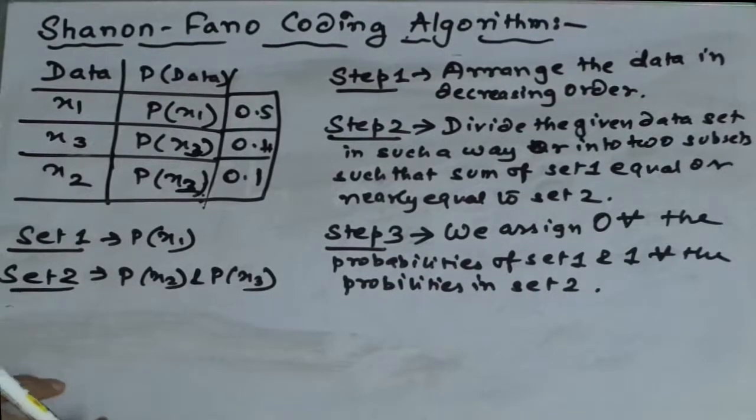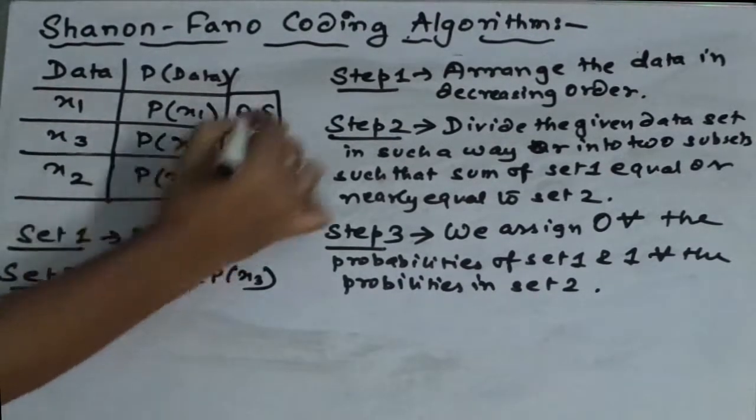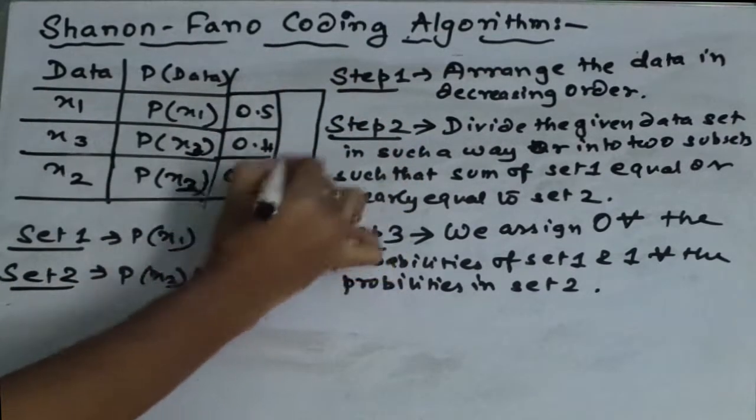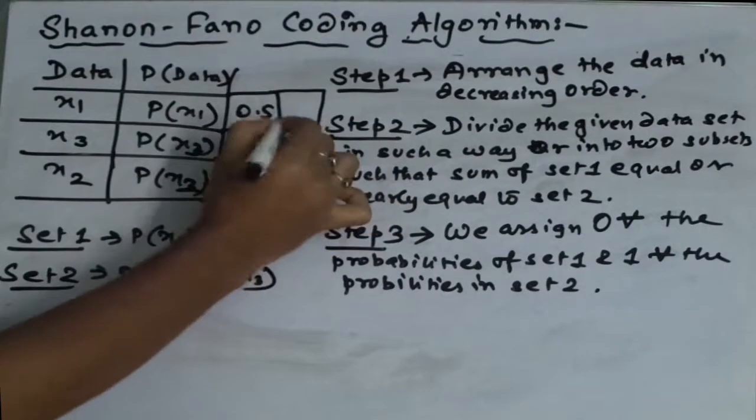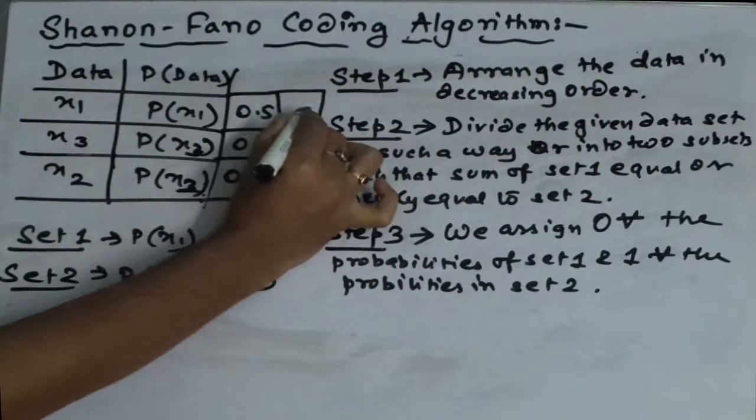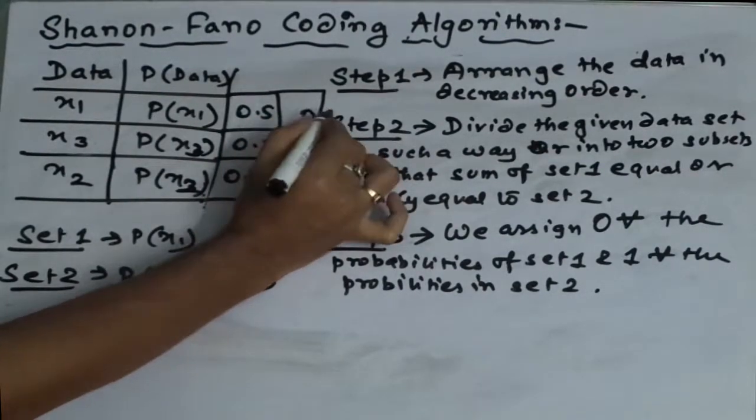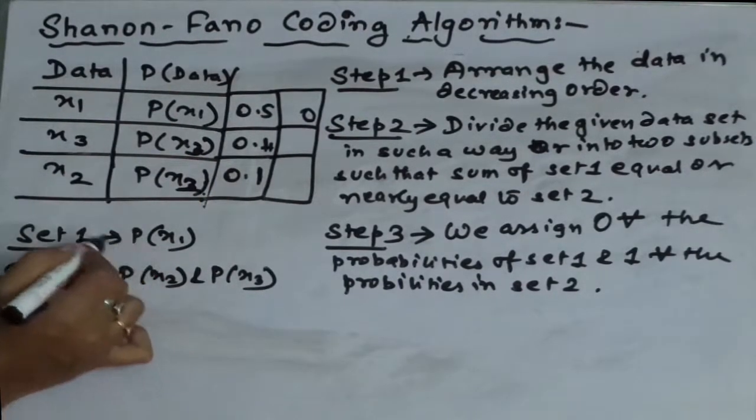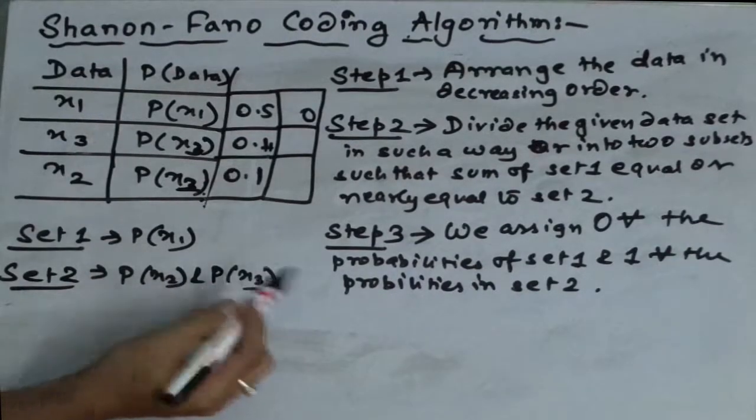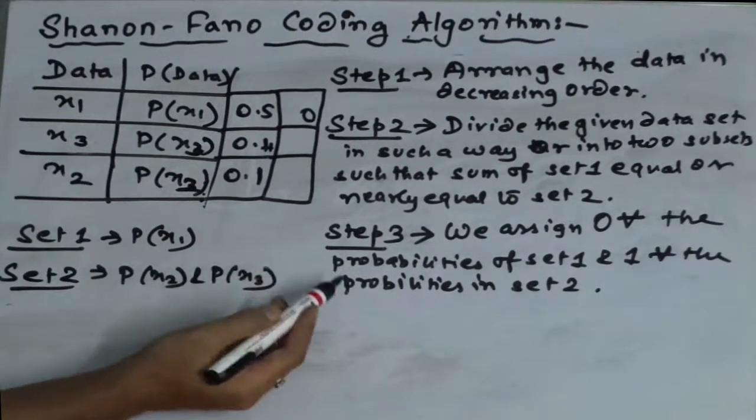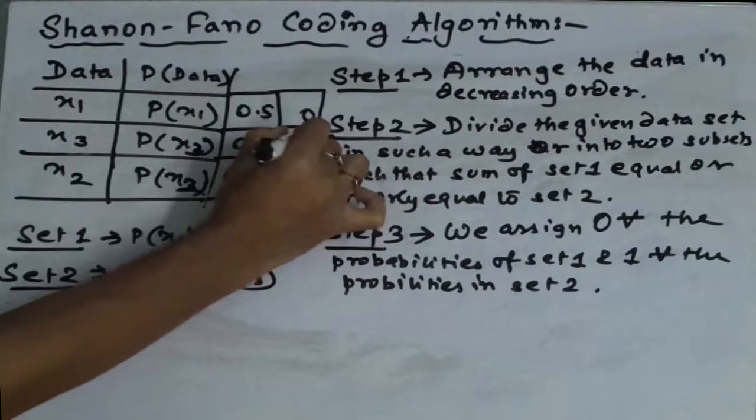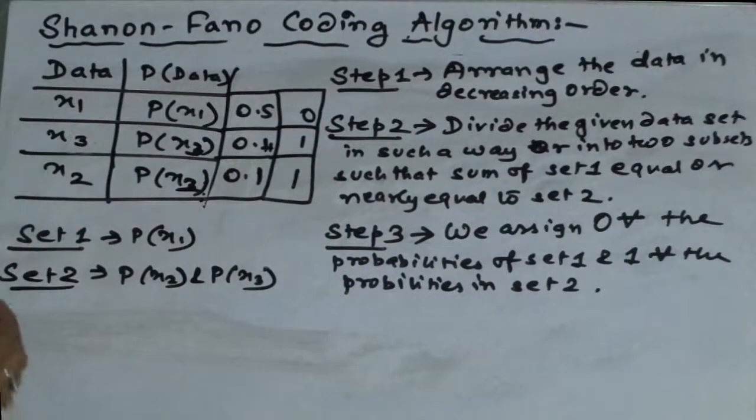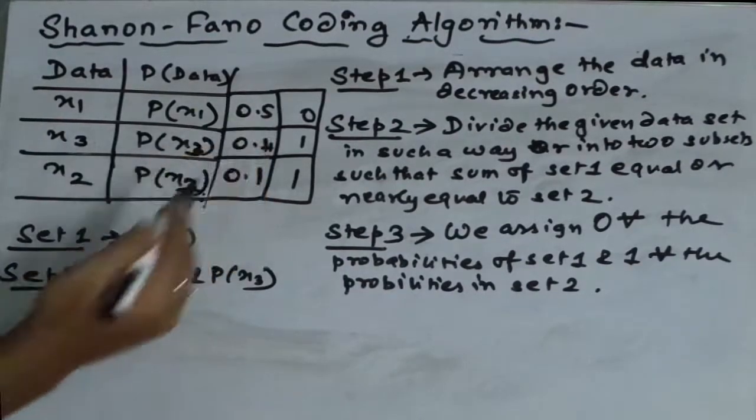What does that mean? That means first we have to assign 0 to the set one because set one is p of x1. And what we have to do in the next step? That is, we have to assign 1 to the probabilities in the set two. So now this is it.